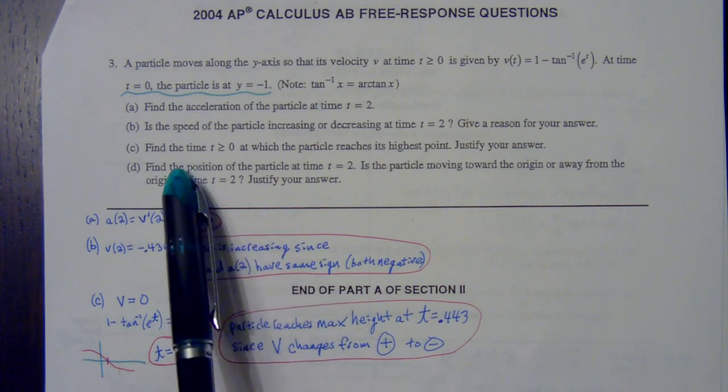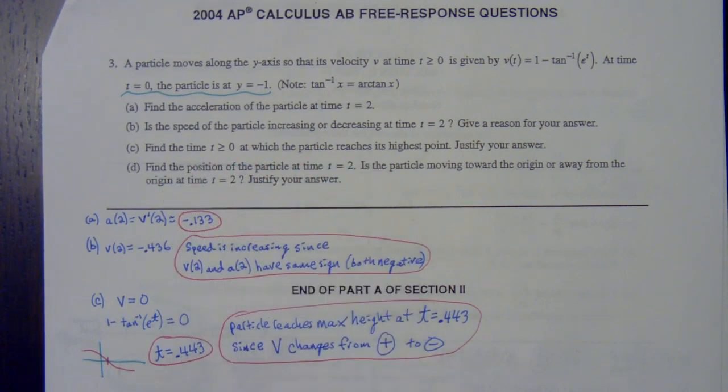Letter C says, find the time at which the particle reaches its highest point. Just think, if you throw a ball up in the air and it comes back down, when it reaches its highest point the velocity is equal to zero. When it changes direction, the velocity changes sign. If you're going up the y-axis, your velocity is positive. If you switch and go back down, your velocity changes to negative. You switch directions.